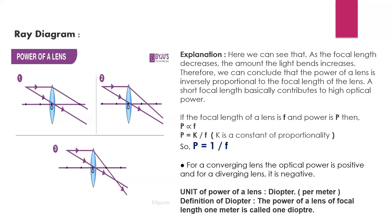Power of the lens is inversely proportional to focal length. So we can write P is proportional to 1/F, where F is focal length of the lens and P is power. In order to remove the proportionality sign, we replace it with a constant K. So our final equation is P equals 1/F. For a converging lens, the optical power is positive, and for a diverging lens, it is negative. The unit of power is diopter, also written as per meter. The definition of diopter: the power of a lens of focal length 1 meter is called 1 diopter.